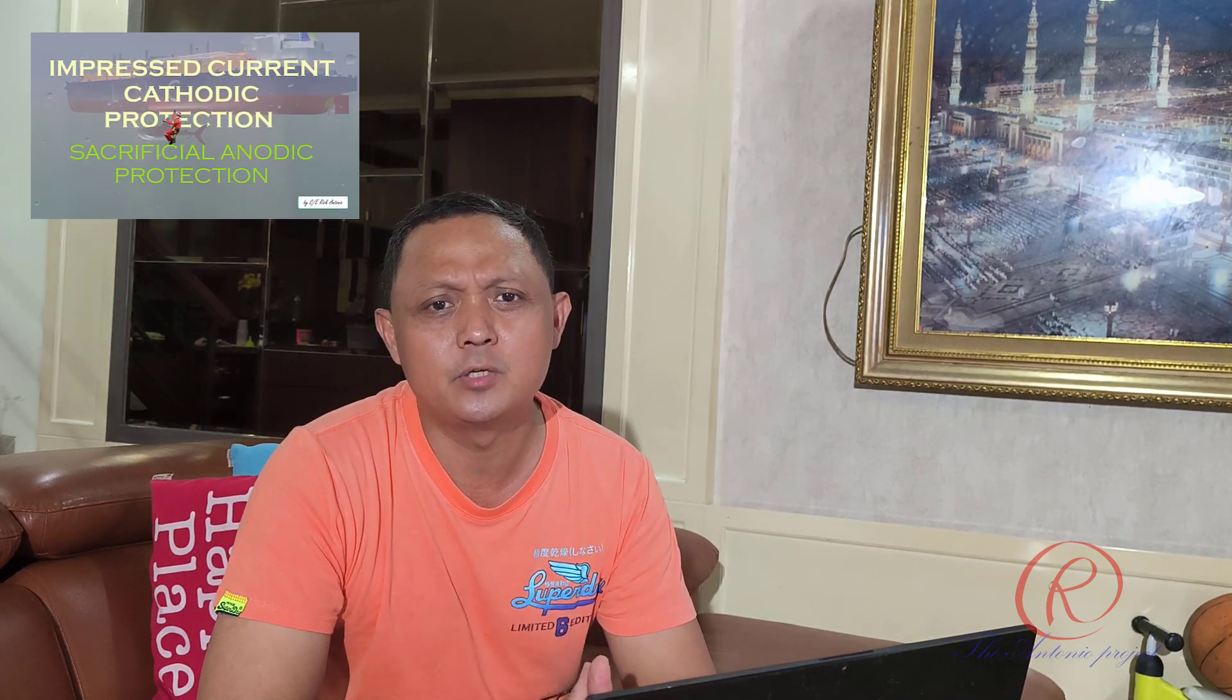You can watch my previous video about impressed current cathodic protection for your full understanding about shaft earthing device and rudder bonding cable. Mainly, the purpose of shaft earthing device and rudder bonding installed on boats is to avoid spark erosion on the main production gear, shaft bearing, or rudder carrier.